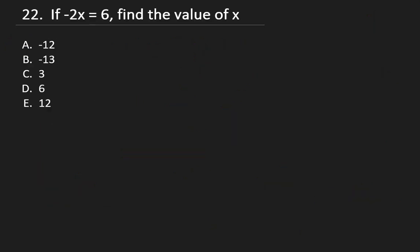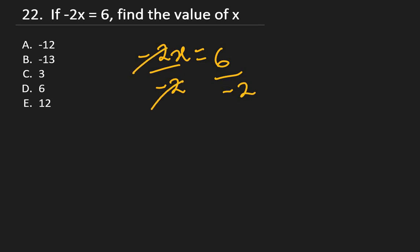Question 22: If −2x = 6, find the value of x. Divide both sides by −2: x = 6 ÷ (−2) = −3. The answer should be −3, but it appears that answer is not listed among the options, so there may be an error in the question.